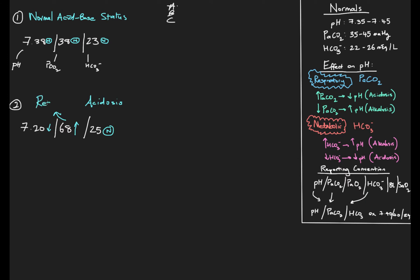This would be called a respiratory acidosis. I've made no reference to compensation - we'll do those in a later video. For now I want to get the basic acid-base disturbances down first - respiratory acidosis, metabolic acidosis - and then we'll start looking at whether there's compensation.